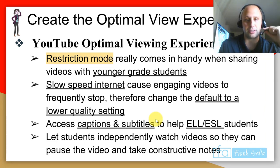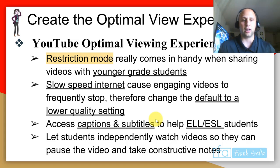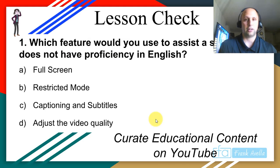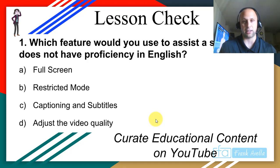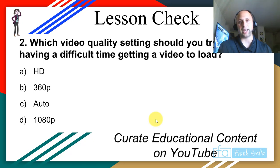YouTube optimal viewing experience summary: restrictive mode is good for younger grade students. If you have slow internet, change the default to a lower quality setting. Use captions and subtitles for ESL and ELL students. Let students independently watch videos — one of the best parts is that they can pause, go back, and rewind, which they can't do during a regular lecture. Lesson check: which feature helps a student without English proficiency? Closed captioning and subtitles.